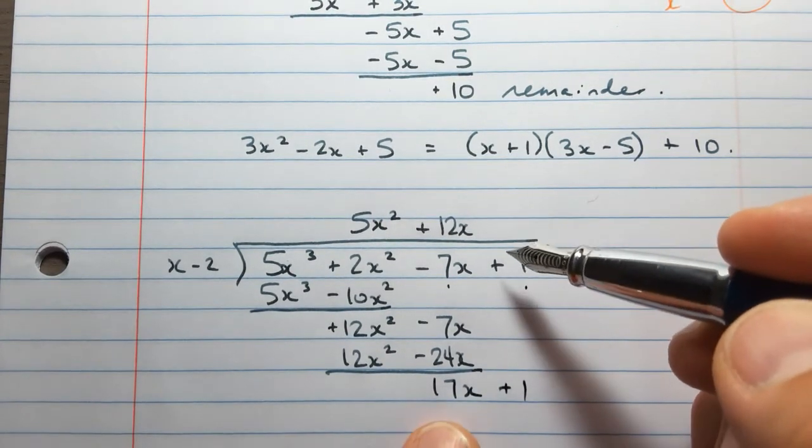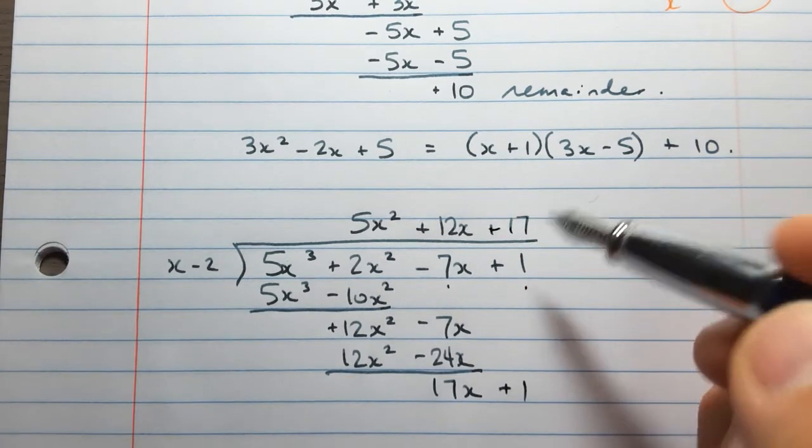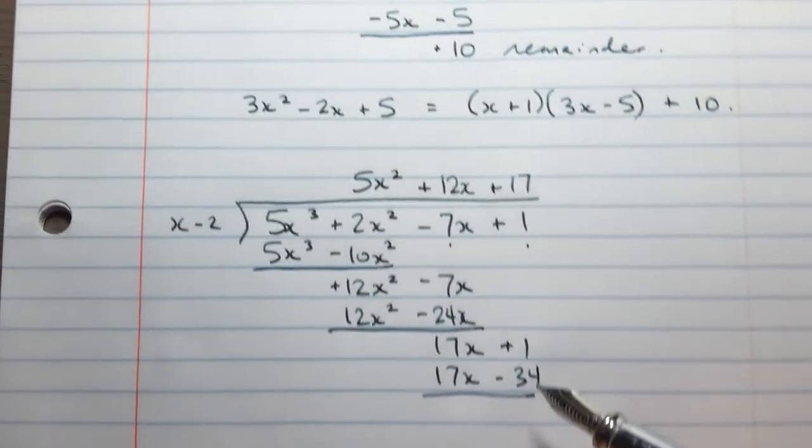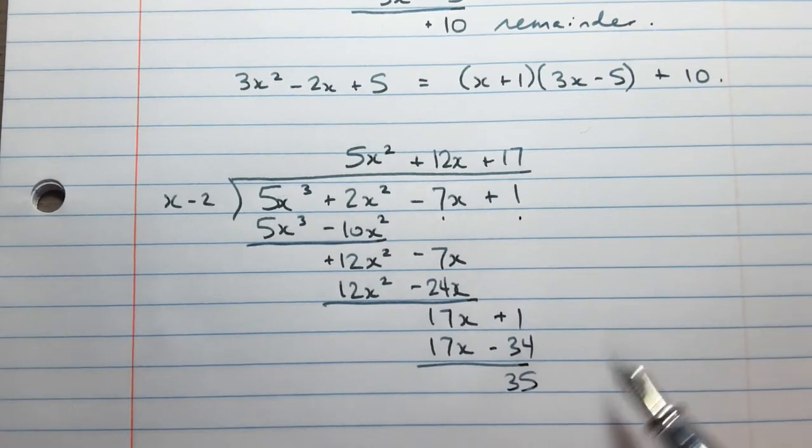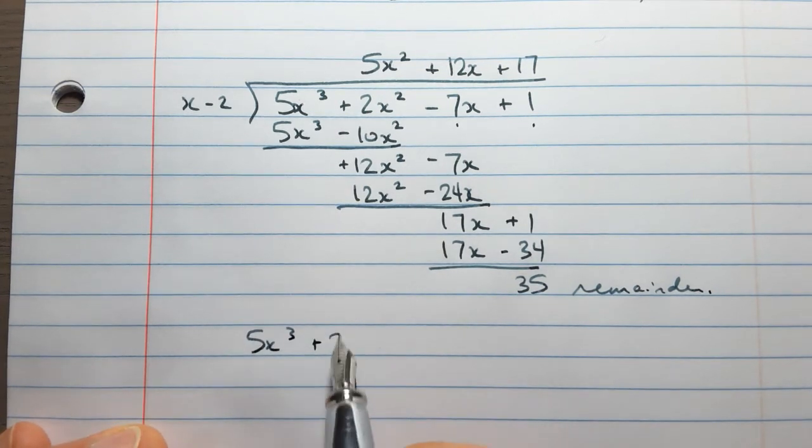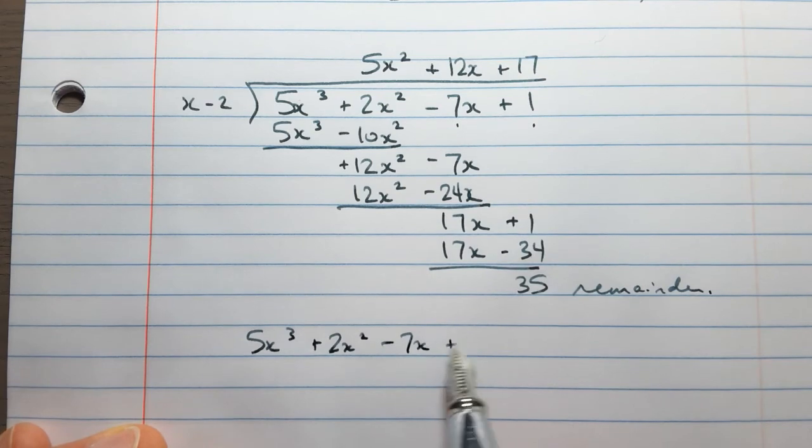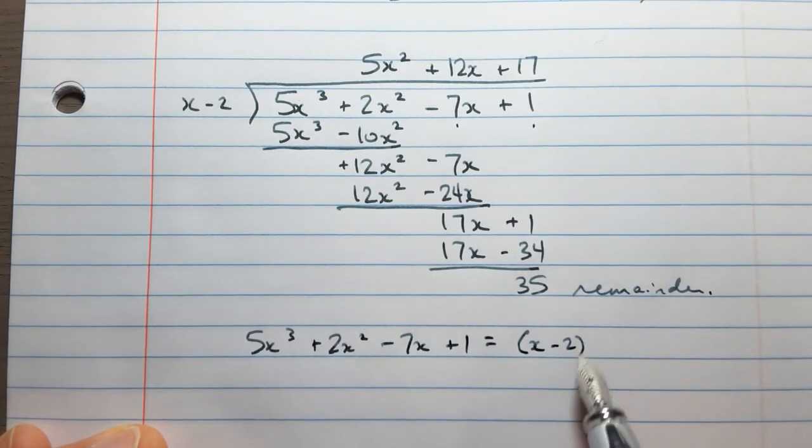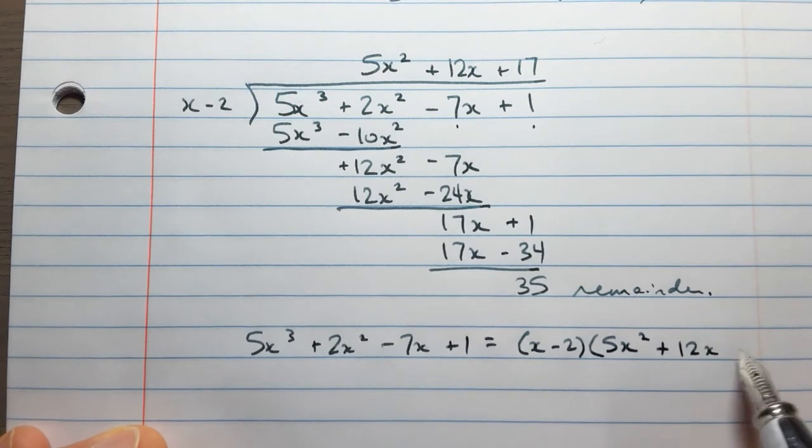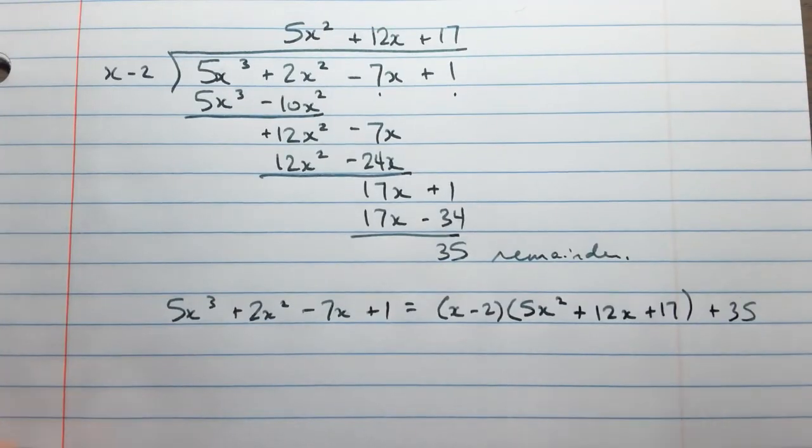Bring down my plus 1. Last part of the quotient. 17x divided by x is 17. That'll be 17x and minus 34. When I subtract, 1 minus negative 34 is the same as 1 plus 34, which is positive 35 is the remainder. 5x cubed plus 2x squared minus 7x plus 1 is equal to x minus 2 times 5x squared plus 12x plus 17, and we have a 35 remainder added on at the end.